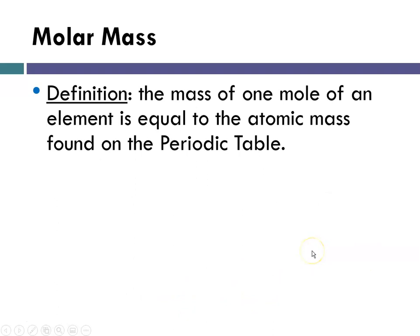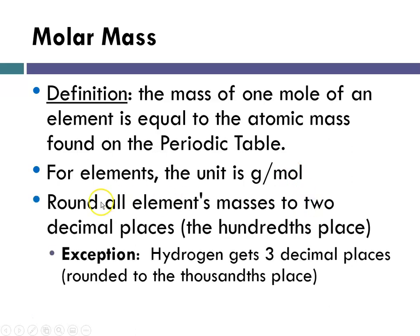So molar mass is the mass that gives you one mole of an element. And it's equal to the atomic mass found on the periodic table. So for elements, the unit, as I said, is grams per mole. And what we're going to be doing is, when we're reading off the periodic table, because remember when we were calculating average atomic mass, it might be 16 or it might be 15.9994 or 12.0107, whatever. So what we're going to do is, since the masses on the periodic table are going to vary quite a bit, our convention is going to be we're going to round all element masses on the periodic table to two decimal places. That would be the hundredths place, with the exception of hydrogen. Hydrogen, we round to the thousandths place. And again, we will be using this all year long. So it's really important to get in the habit of rounding correctly as soon as possible.